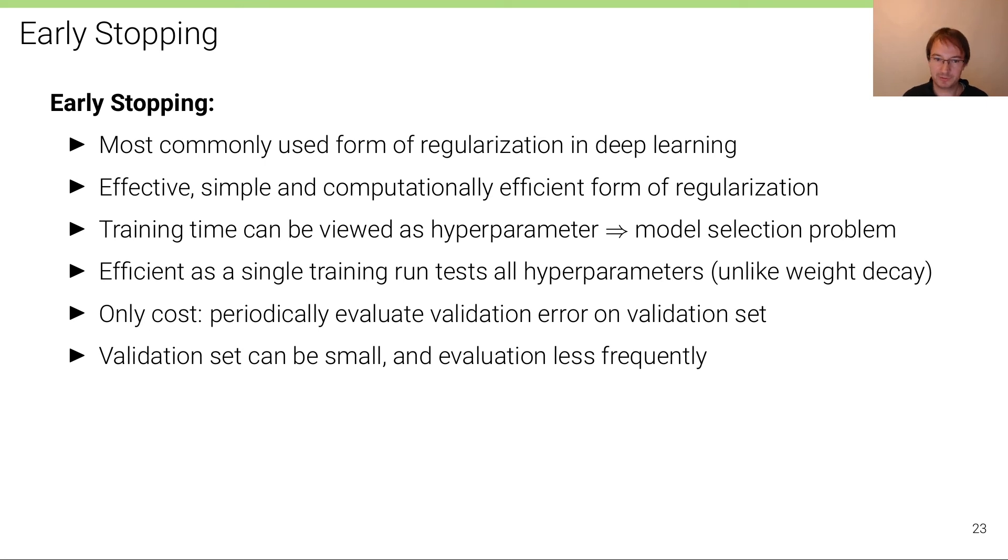This additional cost that is incurred by this additional forward pass in the validation set can be reduced by making the validation set smaller than the training set, which is typically done, so this forward pass doesn't matter. Or evaluating less frequently, for instance evaluating only after every epoch where we have done maybe a thousand iterations in between. So really, this additional cost doesn't matter compared to all these forward and backward passes that we have done in between.